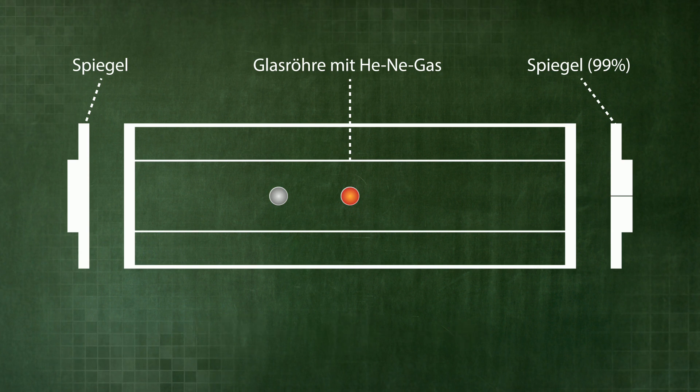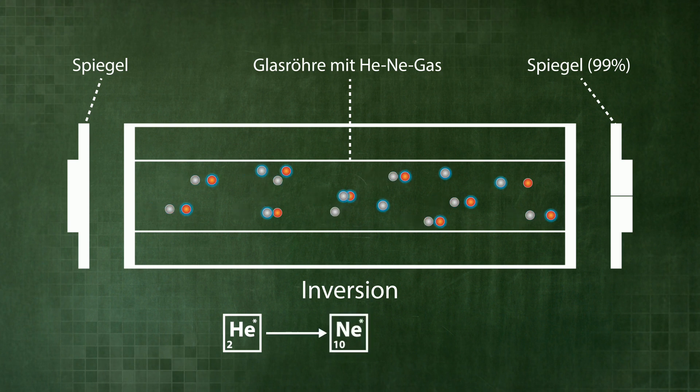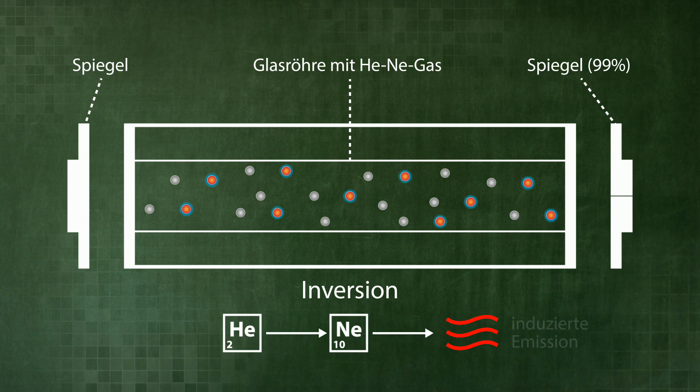The so-called inversion is a key mechanism in lasers. Excited helium is very durable. That's why it is possible to generate many excited helium atoms simultaneously. Excited helium atoms give energy off to many neon atoms, which then generate many photons in stimulated emission.